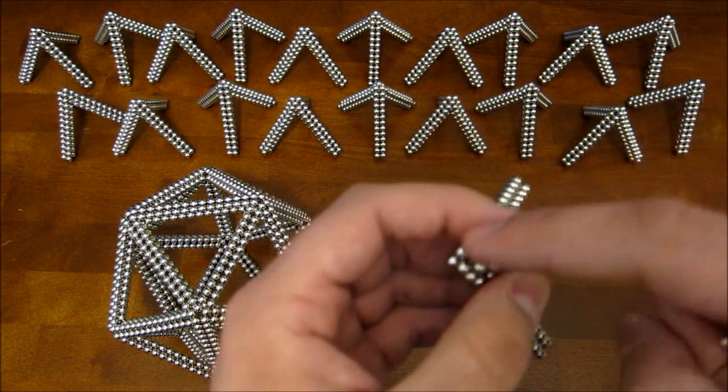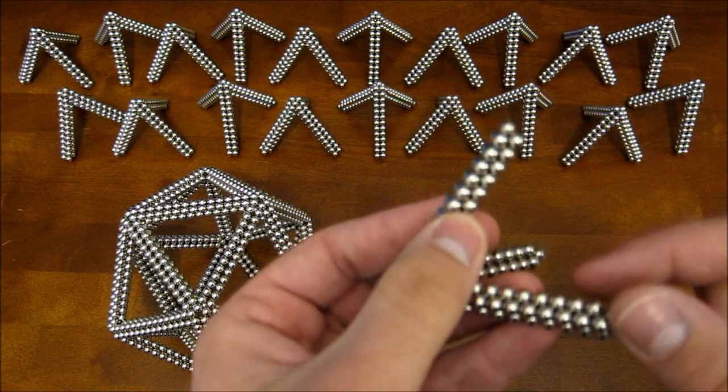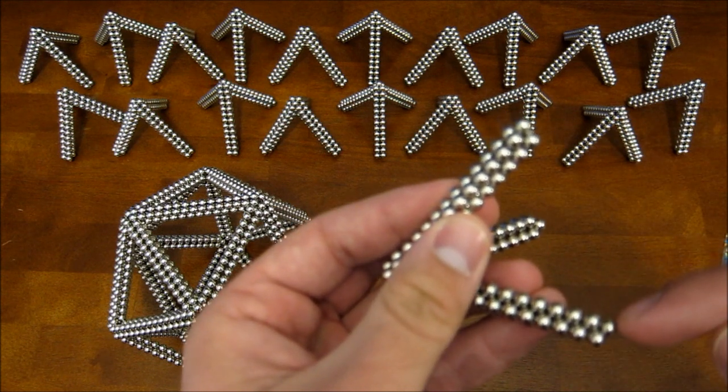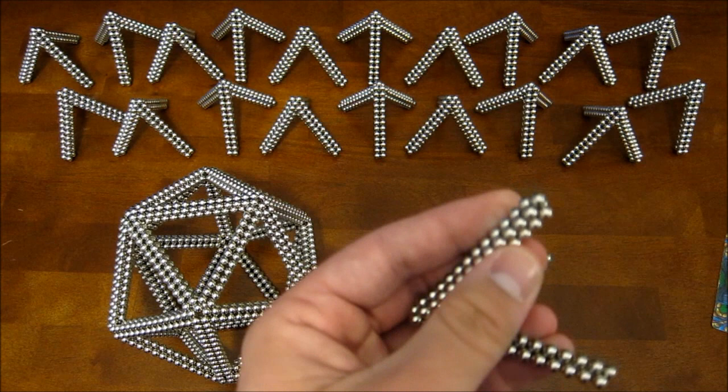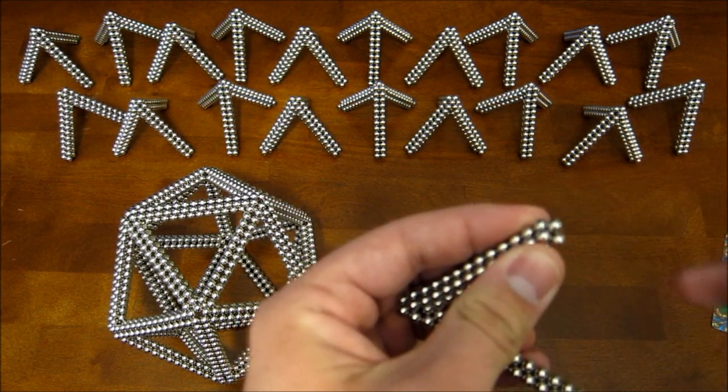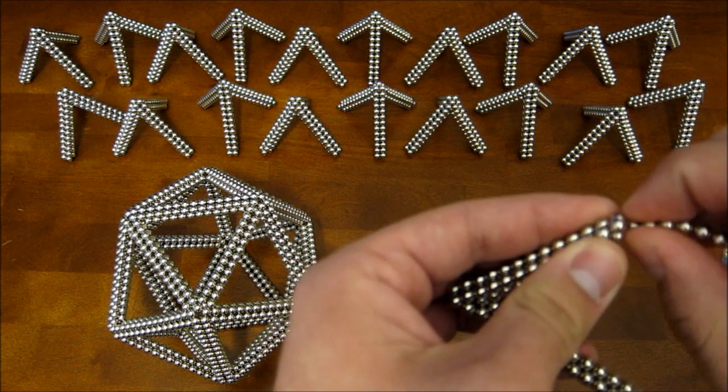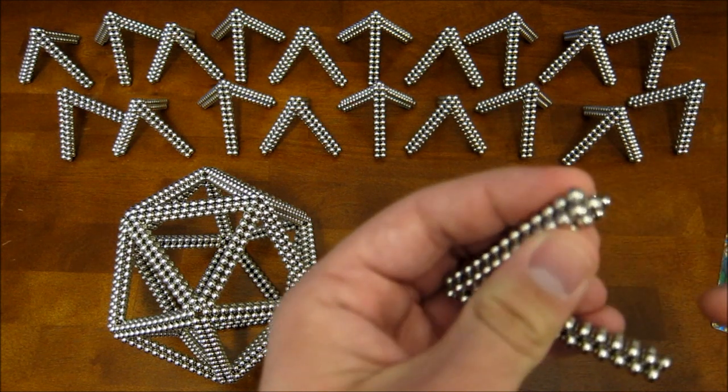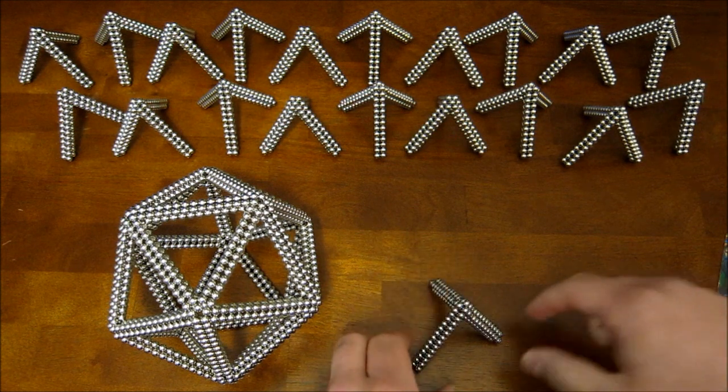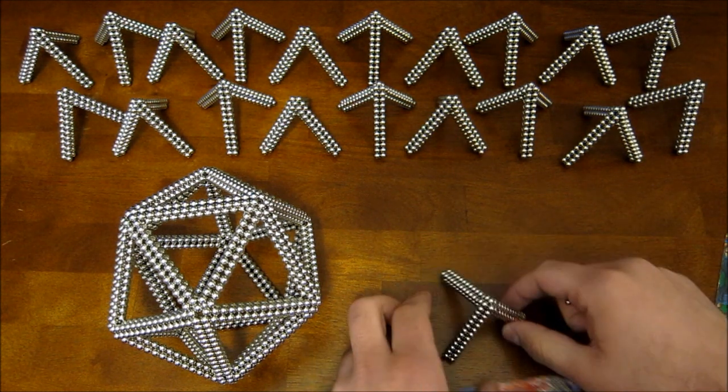And then you'll have one that ends kind of backwards. See this ends with the point pointing down and this ends with the point pointing sideways. So for the one with the point pointing sideways you're going to want to take away two magnets. And that'll fix it to where the point is pointing down.